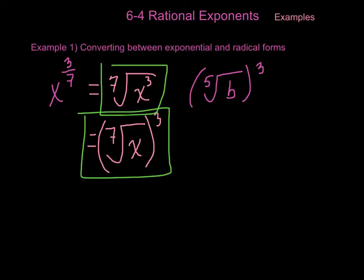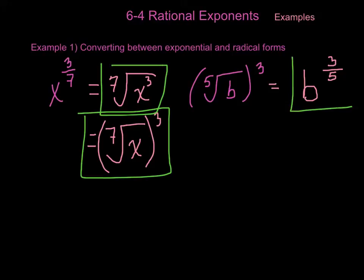For this example, we need to convert to exponential form. To do so, the radicand will remain the same — it will be b. The 3 becomes the numerator for the exponent, and the index, or 5, becomes the denominator. This will be your final answer.